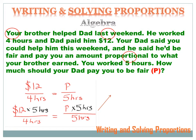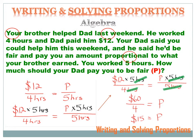We're not done yet. On the left side, I've got five hours over four hours. Just like you can cancel out numbers, you can cancel out units — I've got hours and hours, and I can cancel those out, leaving just 12 times 5 divided by 4. On the right side, I've got five hours over five hours; they cancel out and leave just P. So now I've got 12 times 5 over 4. 12 times 5 is 60, and 60 divided by 4 equals 15, which equals P.